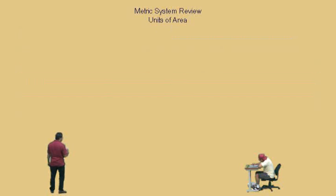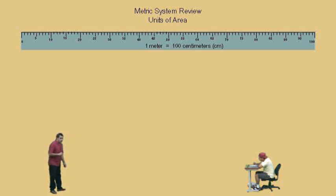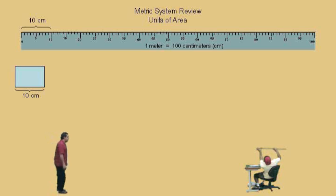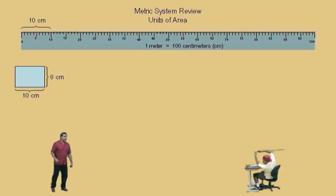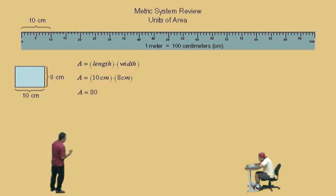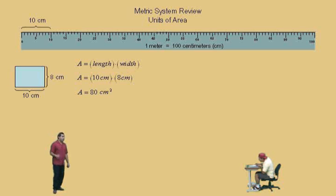Okay, so let's do an area problem. We're going to calculate some area in the metric system. Here's a meter stick with centimeters listed on it. We're going to take this rectangular box — it's ten centimeters as its length. The width of this box is eight centimeters. Now, to calculate the area, the rectangular box is just length times width. Ten centimeters times eight centimeters gives you eighty — centimeters times centimeters gives us centimeters squared, which is our unit for area.